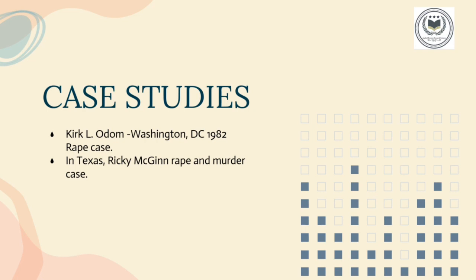The second case is about Ricky McGinn from Texas. He was charged with the murder and rape of a teenage girl, and hair evidence played a key role in the investigation. Detectives discovered a pubic hair in the girl's genital area. To confirm ownership, they conducted DNA testing on the hair, which ultimately confirmed it belonged to Ricky McGinn, leading to his conviction for murder and rape. In this case, the hair was very helpful in convicting the criminal.